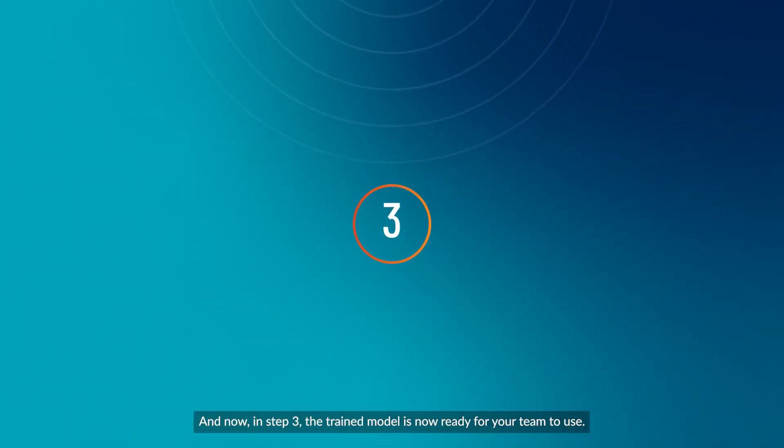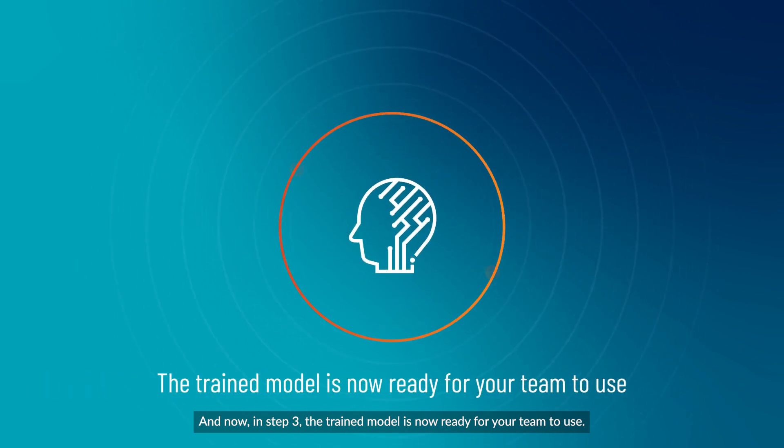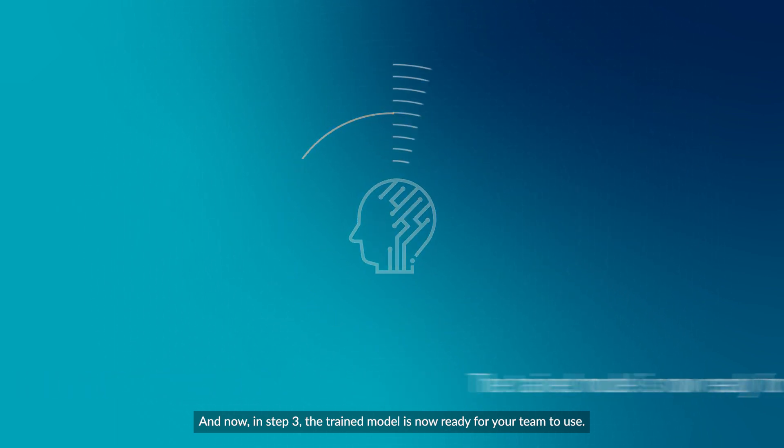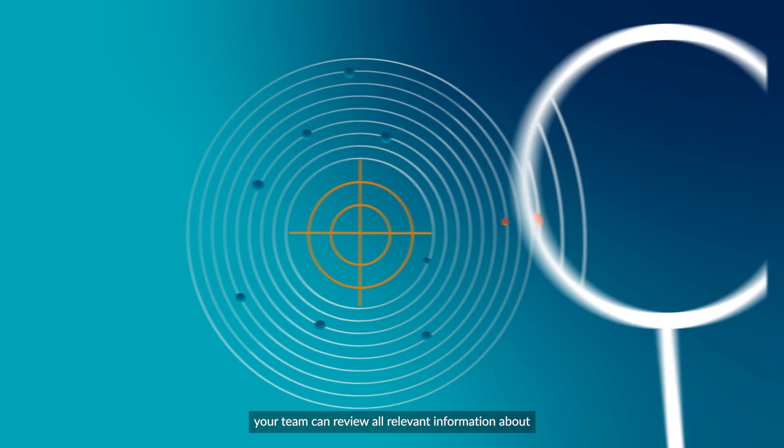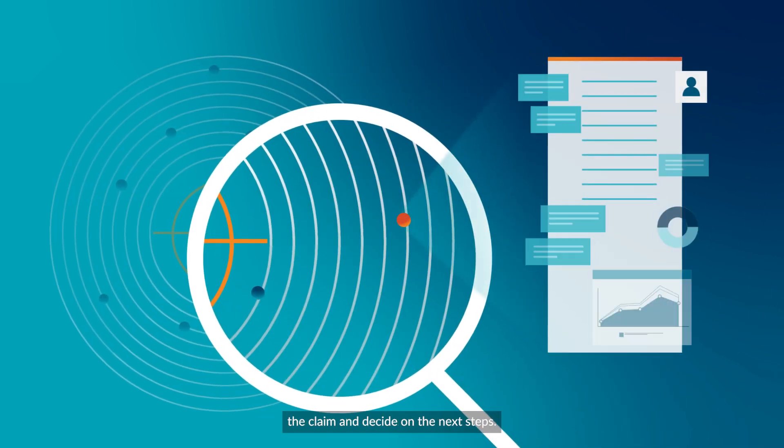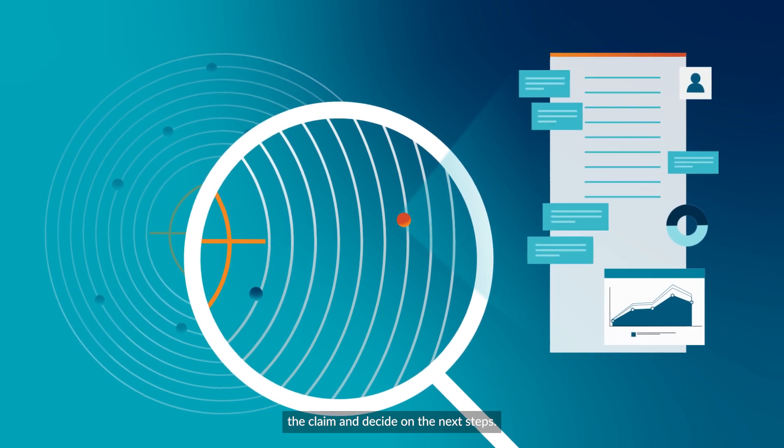And now in Step 3. The trained model is now ready for your team to use. If a claim with a high probability of fraud is identified, your team can review all relevant information about the claim and decide on the next steps.